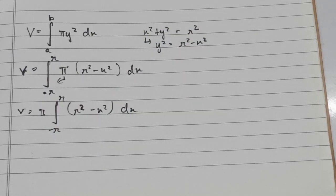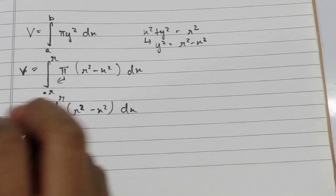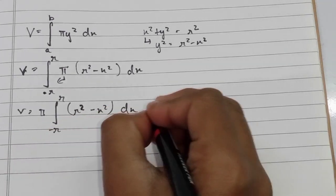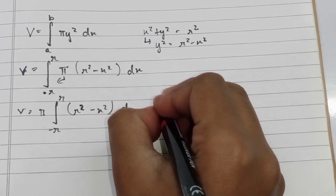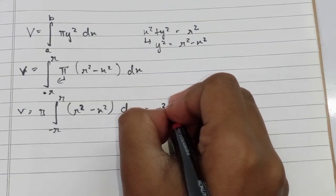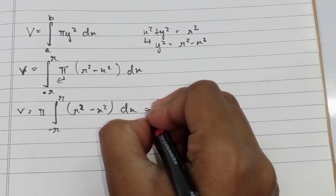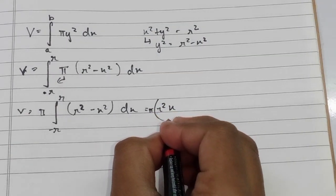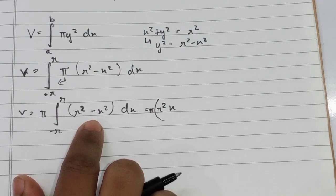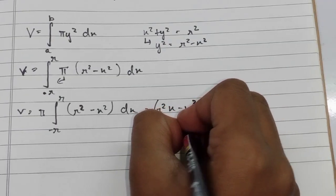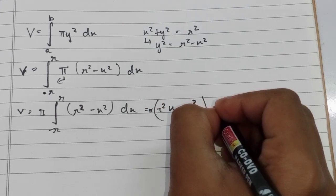Since we are integrating with respect to x, r is a constant in this integral. Integrating r² gives r²x, and integrating x² gives x³/3, so we get π times [r²x − x³/3].